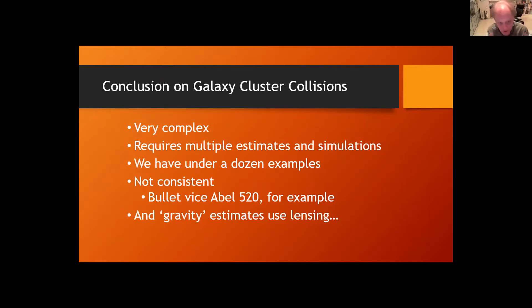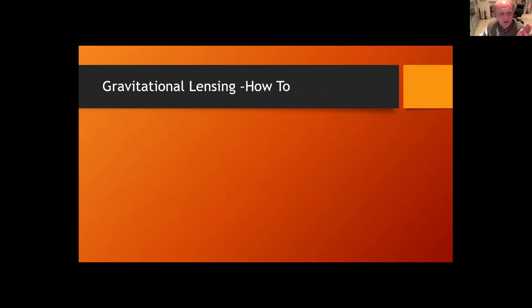So here's my personal take on it. First of all, this is a very complicated problem. The people working on it work very hard. They use multiple techniques. But that very fact, to me, makes it less reliable. And we have under a dozen examples of this, and it's not consistent. The bullet cluster behaves differently than the ABL 520 does. And again, all of the dark matter estimates are based on lensing.